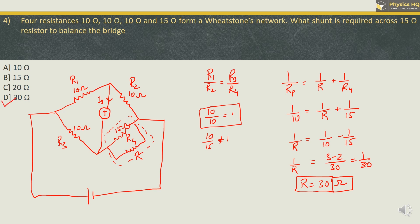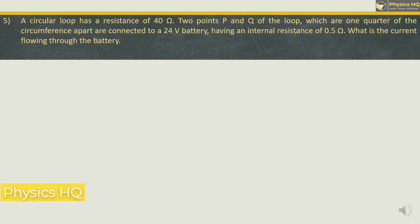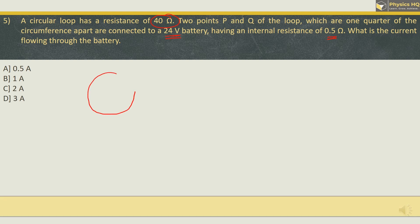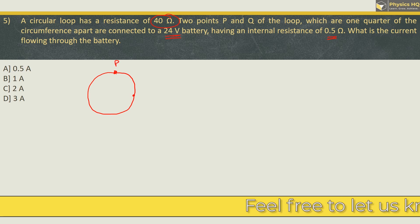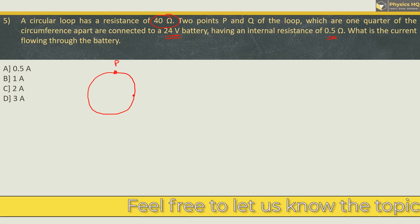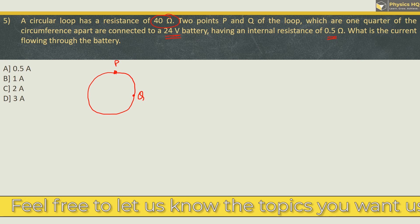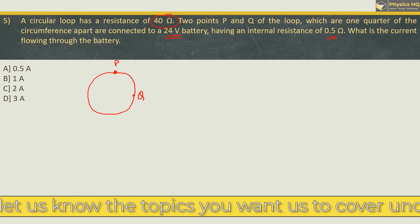Let us check out the next MCQ. A circular loop has a resistance of 40 Ohm. 2 points P and Q of the loop which are 1 quarter of the circumference apart are connected to a 24 volt battery having an internal resistance of 0.5 Ohm. What is the current flowing through the battery? 0.5, 1, 2 or 3 ampere. So let us draw this circle and locate 2 points which are 1 fourth of the circumference apart. So these are the 2 points that we got.